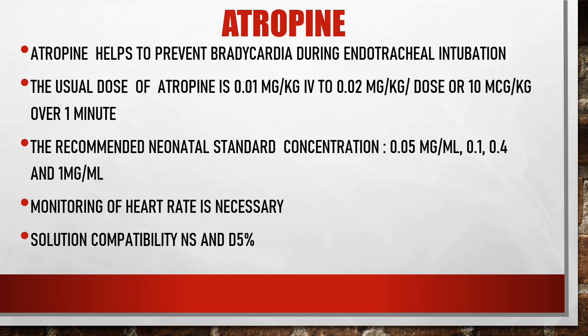The first drug is atropine. Atropine helps to prevent bradycardia during endotracheal intubation. The usual dose of atropine is 0.01 mg/kg IV to 0.02 mg/kg per dose, or 10 microgram/kg over 1 minute. The recommended neonatal standard concentrations for atropine are 0.05 mg/ml, 0.1 mg/ml, 0.4 mg/ml, and 1 mg/ml. Monitoring of heart rate is necessary while administering atropine.